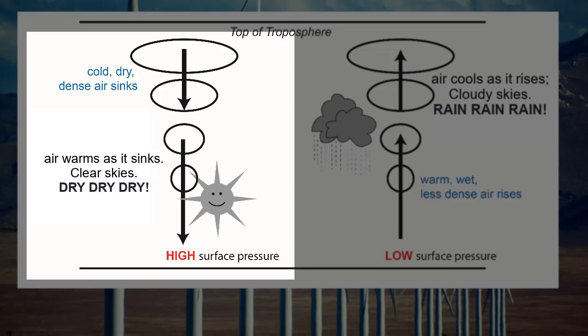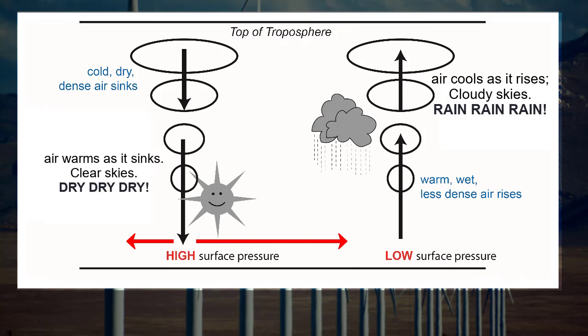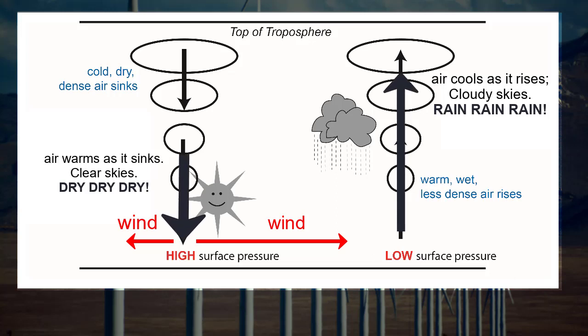Once the air reaches the surface, it moves horizontally along the surface away from the high pressure and towards the nearest low-pressure air systems, which can be hundreds of kilometers away. That surface air motion is the wind, and as the differences between the pressure of the sinking air and nearby rising air intensify, the winds will get stronger.